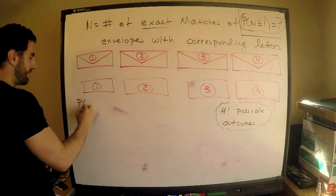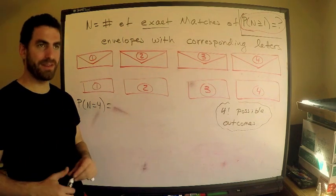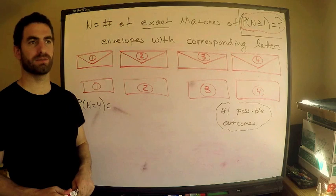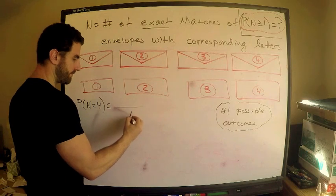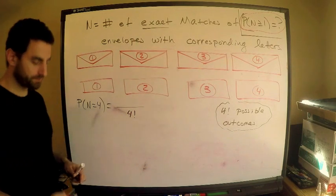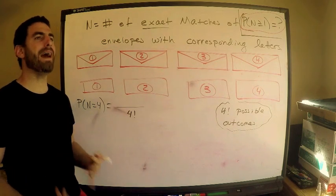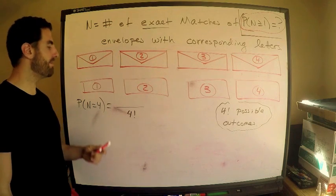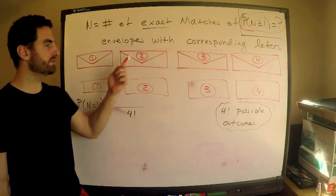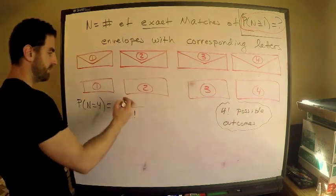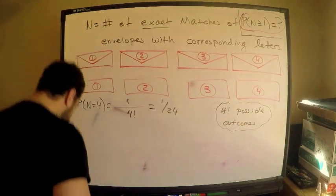I'll start backwards with P(N=4): what's the probability of four exact matches? The denominator is 4! = 24. In the numerator, how many ways can I get four matches? Only one way — one goes to one, two goes to two, three goes to three, four goes to four. So P(N=4) = 1/24.